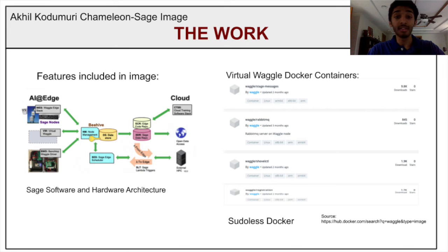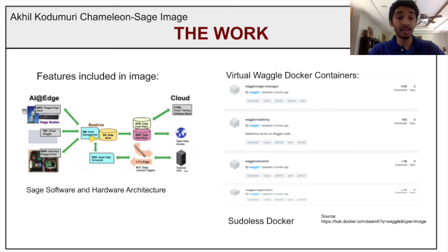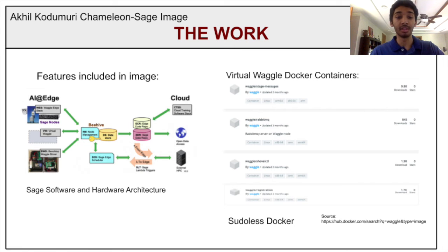That way, even if there are any updates made to Virtual Waggle in the future, a user will not be inconvenienced and updates can be rolled out smoothly. In order to streamline the launching of Virtual Waggle, the feature of running and deploying Docker containers without the use of sudo was implemented into this image. More specifically, any Sage service that requires the use of Docker can be run without sudo.